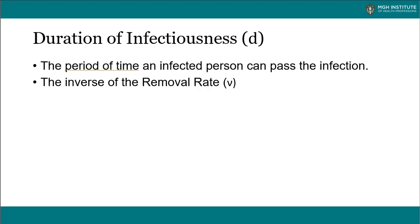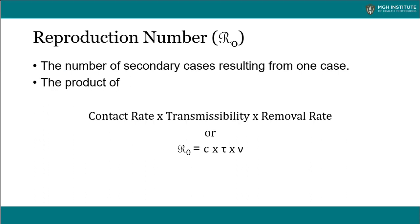The other important pieces of the model are the intrinsic transmissibility of the virus, although even that is under some control when you're encouraged to wash your hands frequently or cough into your elbow. Those are efforts aimed at decreasing the transmissibility of the virus. The duration of infectiousness is the period of time an infected person can pass the infection. For COVID-19, that's probably around 10 days, although the quarantine period of 14 days reflects the certainty needed that someone won't pass along the infection.